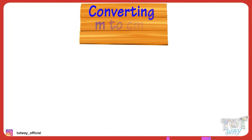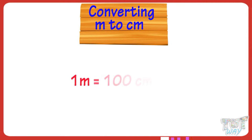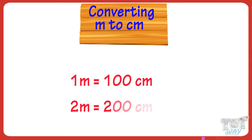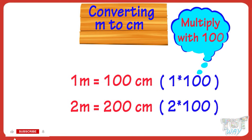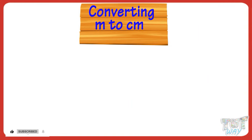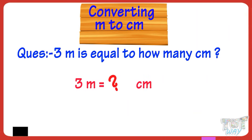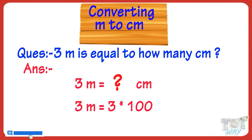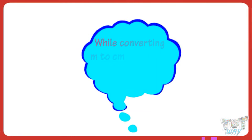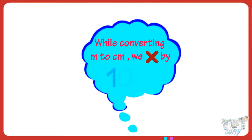Now let's learn converting meters to centimeters. 1 meter equals 100 centimeters, so 2 meters equals 200 centimeters — that is, we multiply by 100. 3 meters will be equal to how many centimeters? It will be 3 multiplied by 100, so we get 300 centimeters. So kids, we multiply by 100 if we want to convert meters to centimeters.